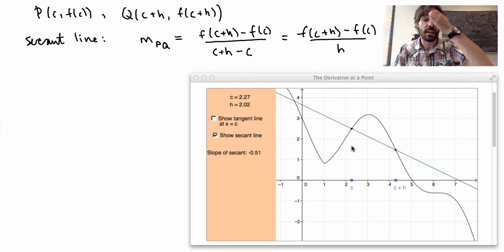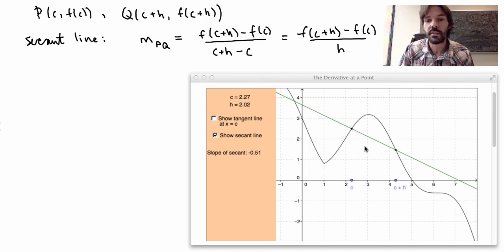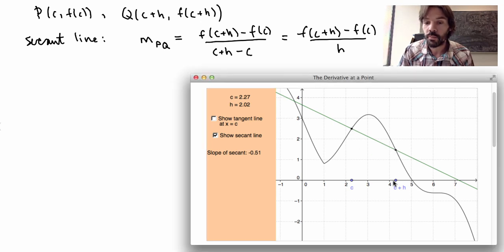Now how do we define the tangent line? So I told you that the tangent line was basically the line that just barely touches the point here. So if I want the tangent line at the point c, it's the line that just touches the graph at this point. So one way to define it is to take this point here and bring it very close to the other point.